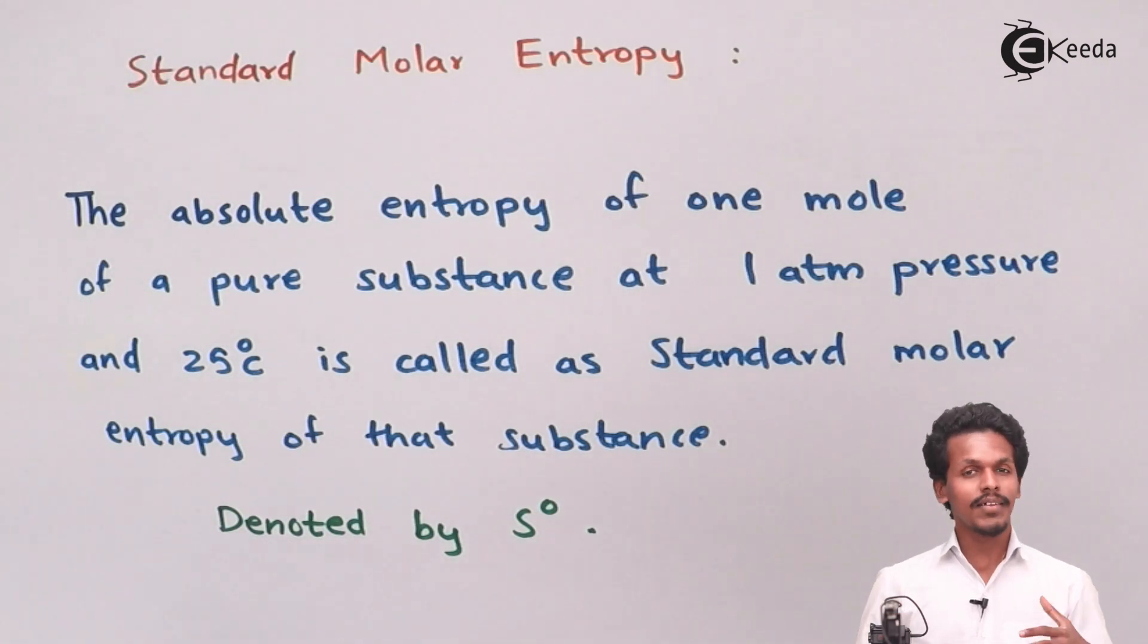But when it comes to standard molar entropy, it is only specified at one atmosphere and 25 degrees Celsius. The standard molar entropy is the entropy of a particular substance in pure form at 25 degrees Celsius and one atmosphere pressure, denoted by S° as you can see here.